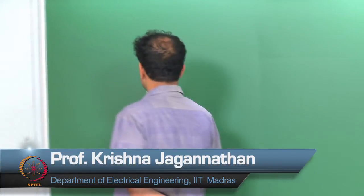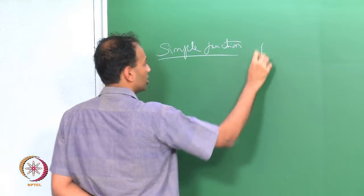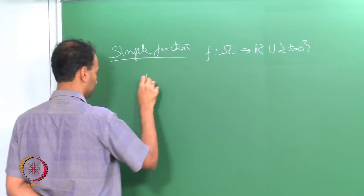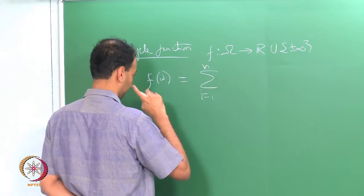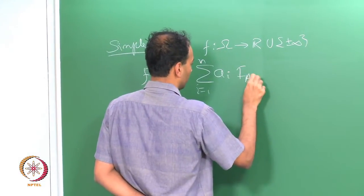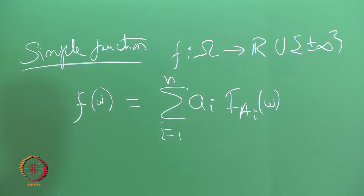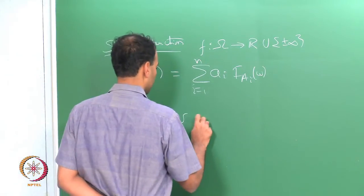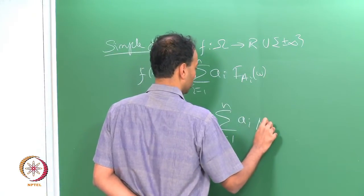Welcome back. We were discussing integrals of simple functions. We said a function is simple if it has the following form: f of omega equal to sum over i equals 1 through n, little a_i times indicator of A_i of omega. We defined integral f d mu, where mu is some measure on the space, as sum over i equals 1 through n, a_i times mu of A_i.